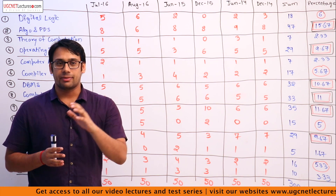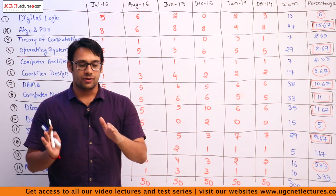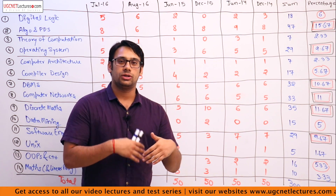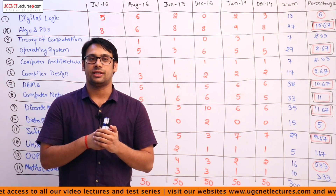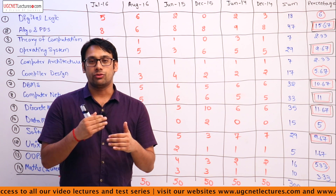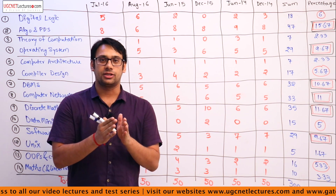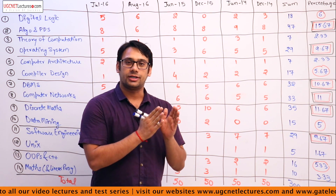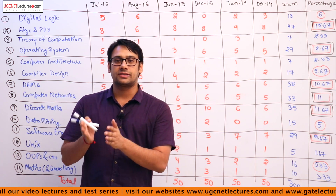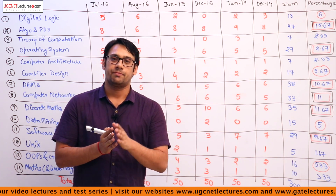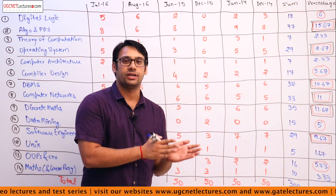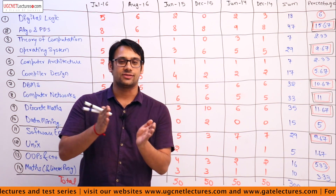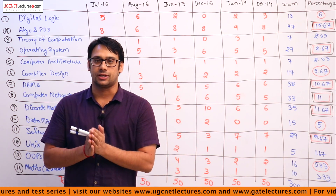What our team has done is we took around the last 10 years of question papers, and then found it is better to take an analysis of the last 6 years of question papers for UGC NET. This kind of analysis we have done for paper 2 as well as for paper 3.